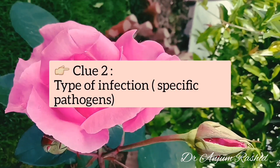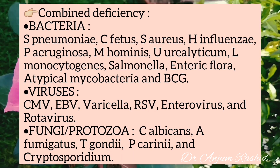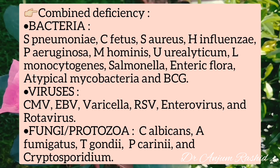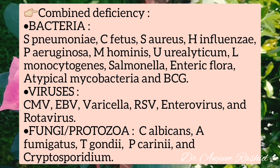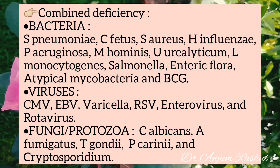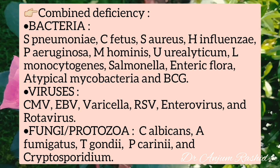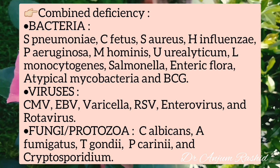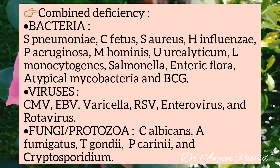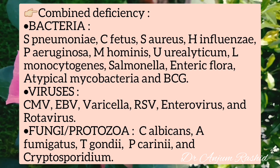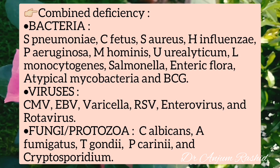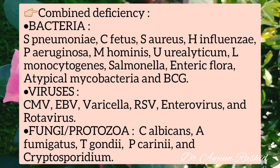The second clue is the type of infection or specific pathogen. In combined deficiency, bacterial, viral, fungal, and protozoal infections are all common. Bacterial pathogens include Streptococcus pneumoniae, Campylobacter fetus, Staphylococcus aureus, Haemophilus influenzae, Pseudomonas aeruginosa, Mycoplasma hominis, Ureaplasma urealyticum, Listeria monocytogenes, Salmonella, enteric flora, atypical Mycobacteria, and BCG. Viral infections include cytomegalovirus, Epstein-Barr virus, varicella, respiratory syncytial virus, enterovirus, and rotavirus. Common fungal and protozoal infections include Candida albicans, Aspergillus fumigatus, Toxoplasma gondii, Pneumocystis carinii, and Cryptosporidium.